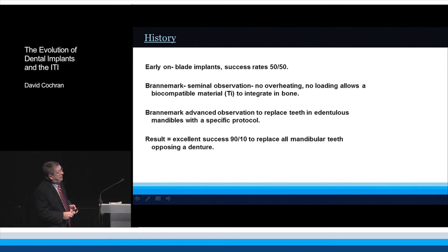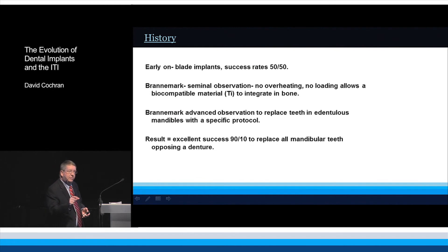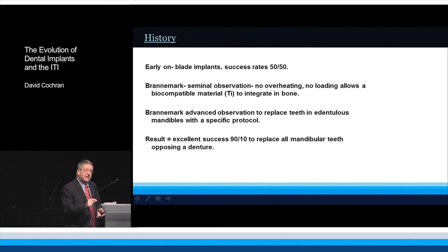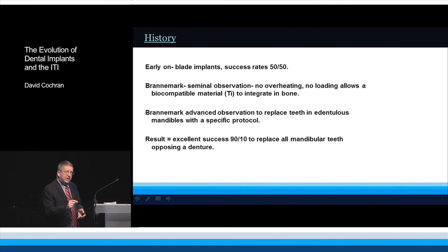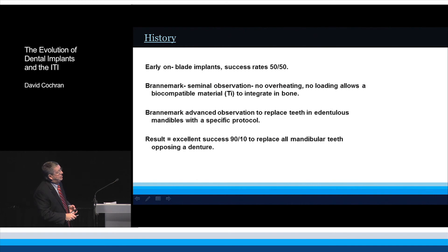What Brånemark did after that was advance that observation — which he initially made using little titanium chambers to look at blood flow — to replace teeth in edentulous mandibles with a very specific clinical protocol.